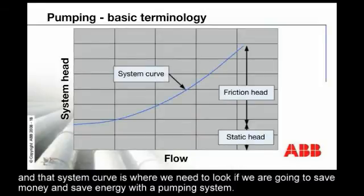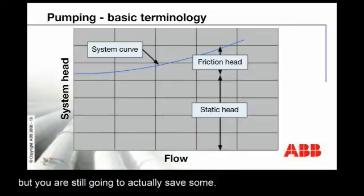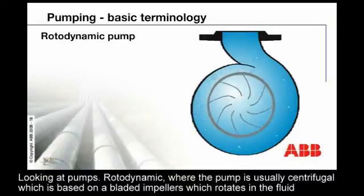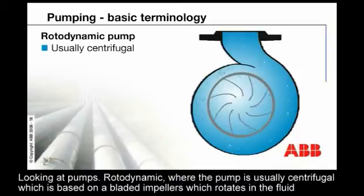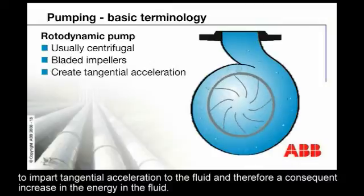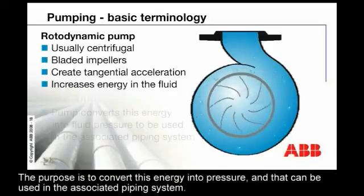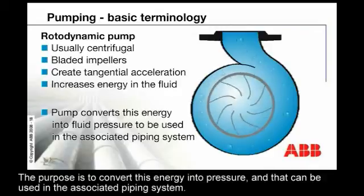That system curve is where we need to look if we're going to save money and save energy with a pumping system. Where the static head is relatively high compared to the friction head, there is actually less capability of saving money, but you're still going to save some. Looking at pumps, the rotor dynamic, where the pump is usually centrifugal, it's based on a bladed impeller which rotates in the fluid to impart a tangential acceleration to the fluid and therefore a consequent increase in the energy in the fluid. The purpose is to convert this energy into pressure, which can be used in the associated piping system.